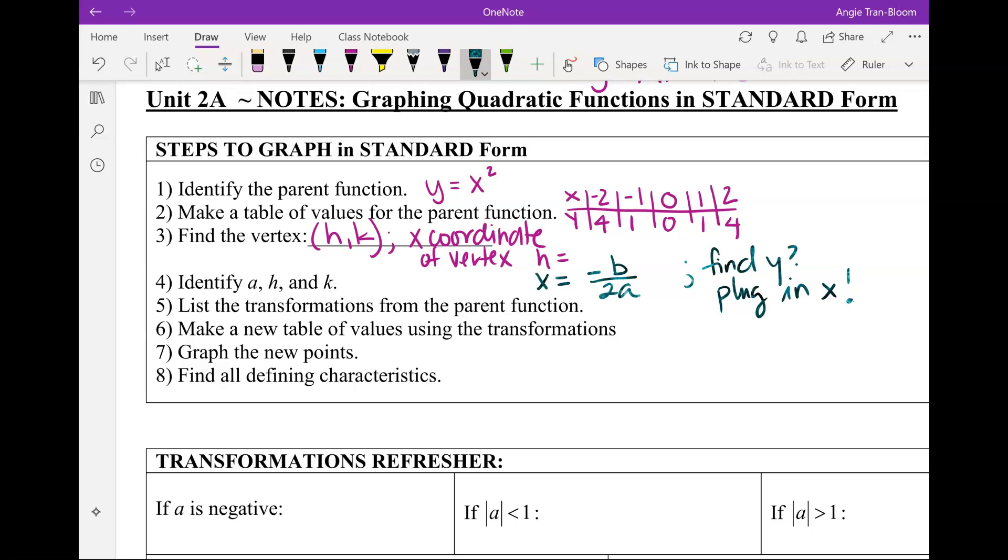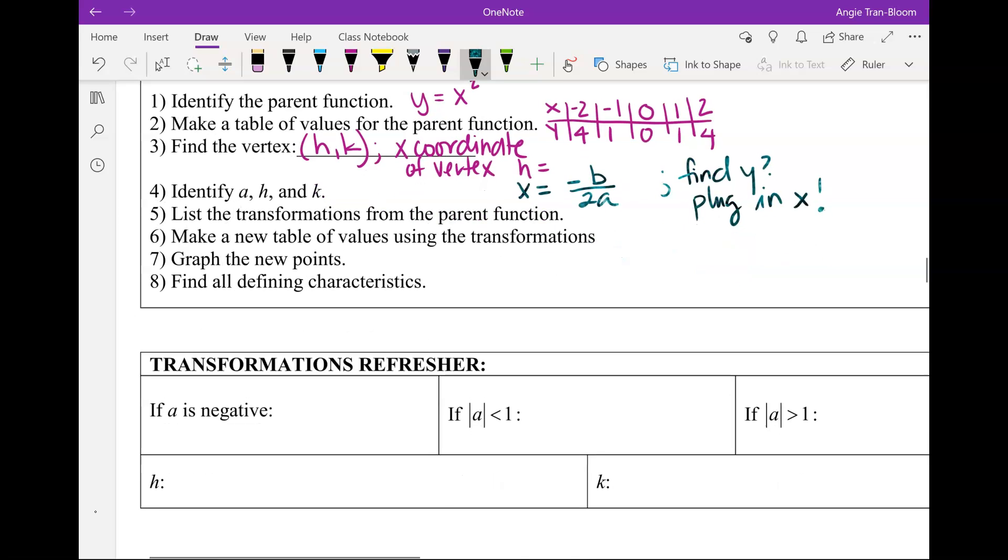We, just like always, will identify your a, h, and k, because those will give you the transformations. Then we're going to try to list your transformation. From the transformation, we will make new values. We're going to plot the points, and then we're going to fill out the table. None of that is new except the vertex formula. You should know how to use x equals negative b all over 2a if h and k are not found right away.